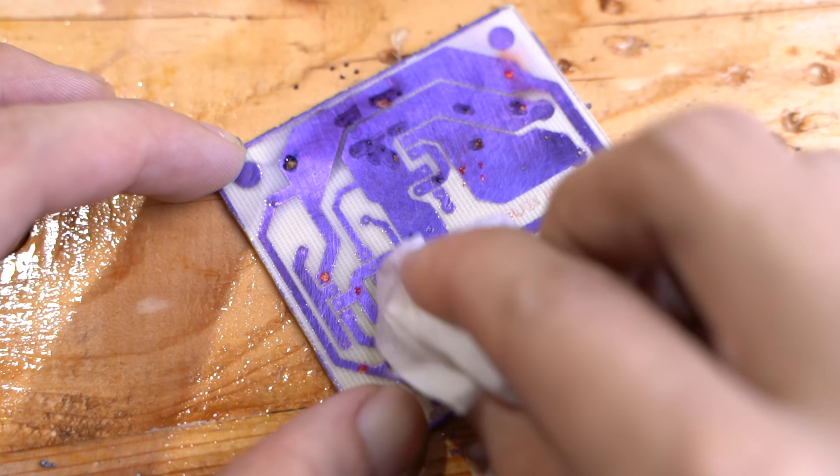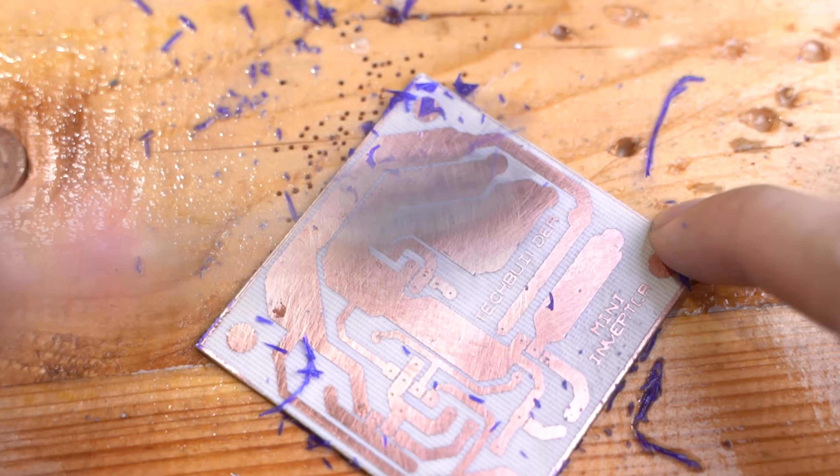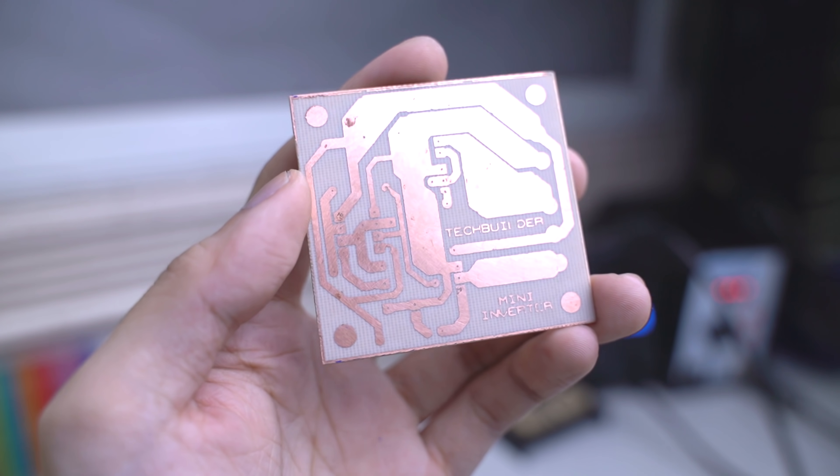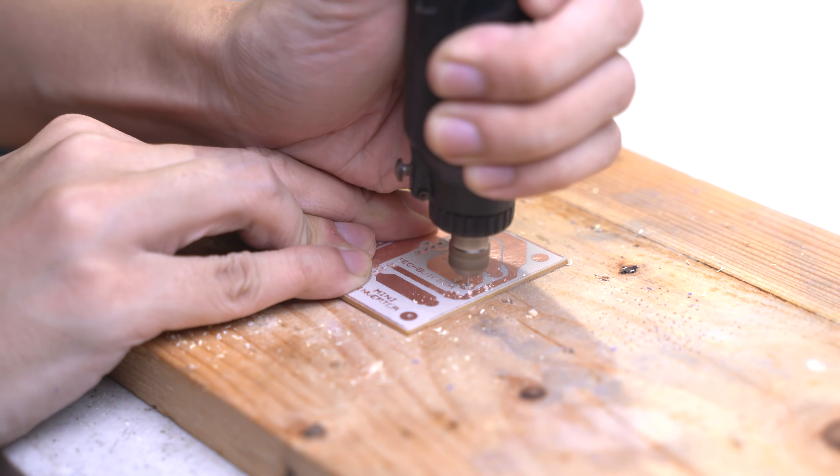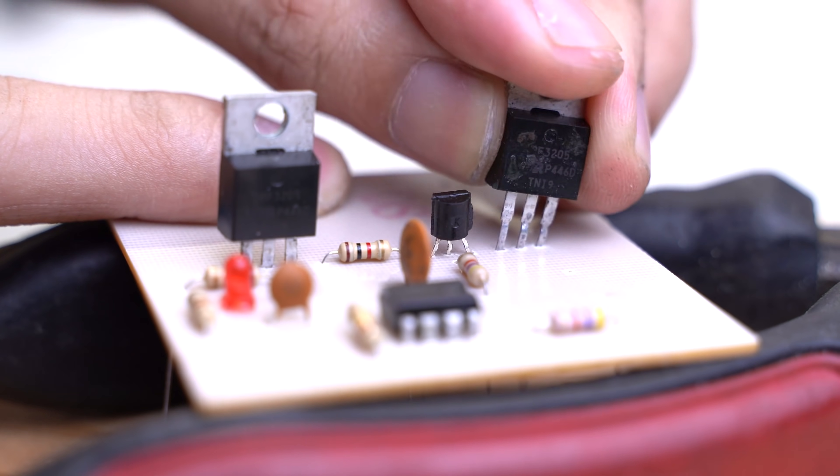Unlike presensitized boards, a cloth with pure acetone isn't enough for removing paint on this one. You will have to use a toothbrush as well. Overall, the dry film method requires a lot of practice. Unlike my previous presensitized PCB tutorial, I wouldn't recommend this one for thin-lined SMT boards. Not unless you can master the lamination process.